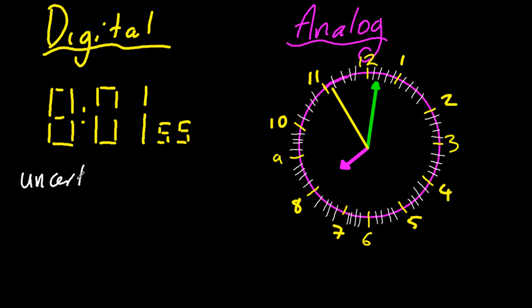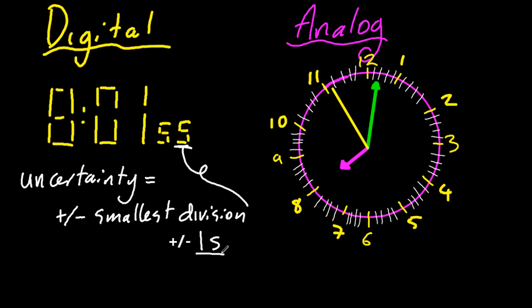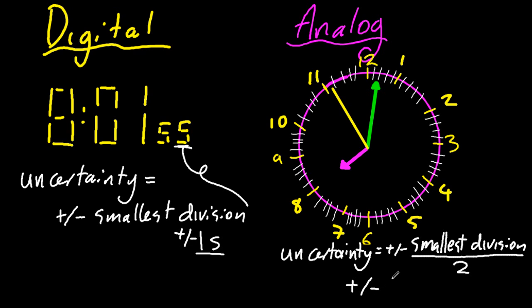So the uncertainty should reflect that. If it's digital, the uncertainty is plus or minus the smallest division, the smallest number that can be shown, which would be one second for the digital case. And for analog, it's plus or minus the smallest division divided by two. Since the uncertainty is less with analog, I can make a much better judgment as to how close I am to the next increment.